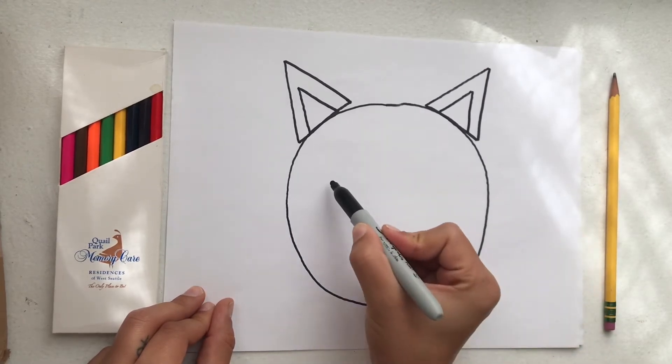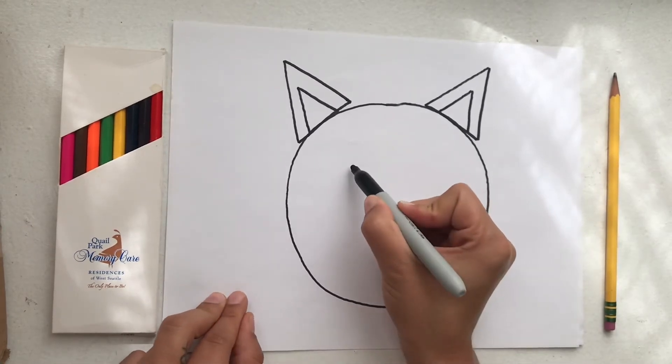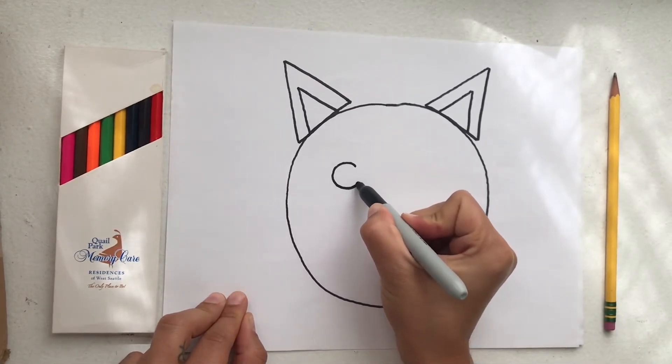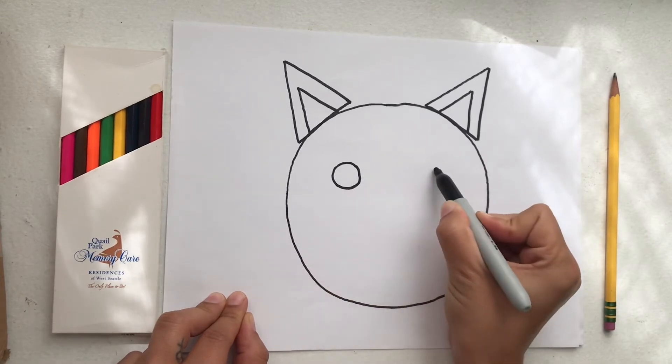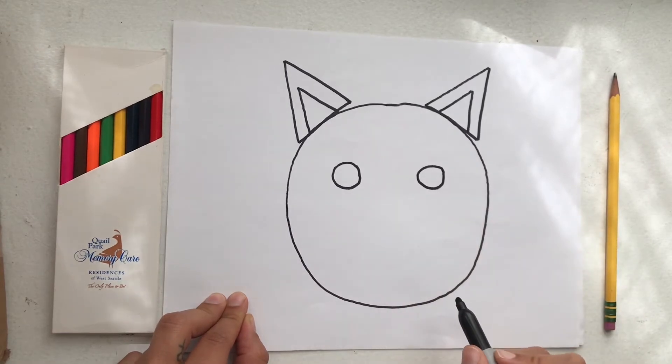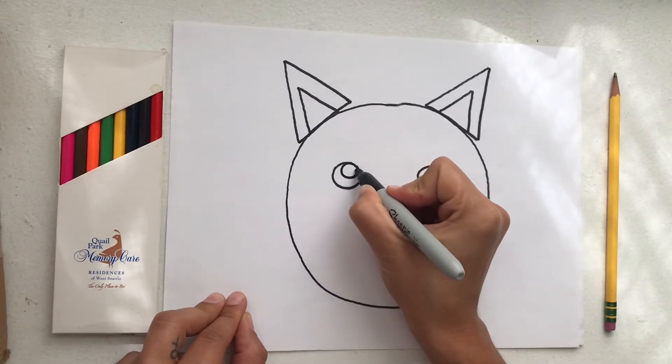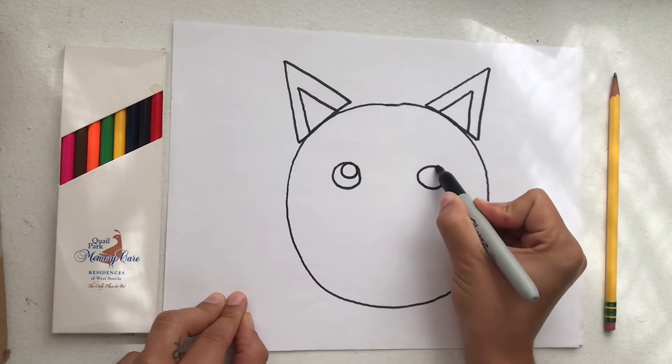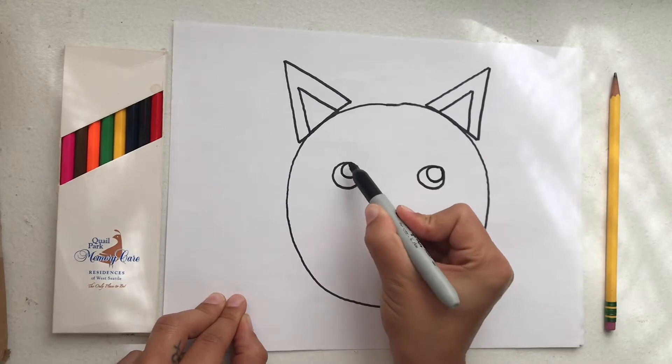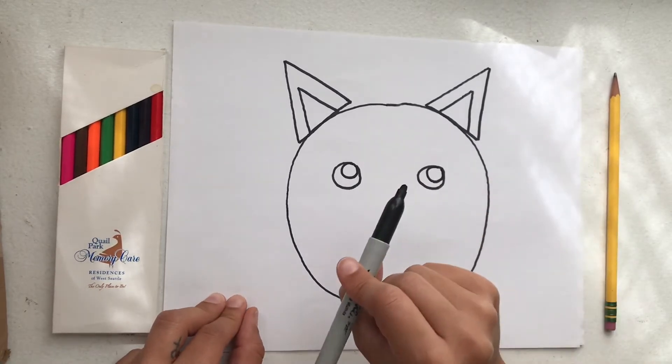For our eyes we are going to do two small circles. I like to do mine around this size but your kitty can have different eyes than mine. They don't need to look just like mine. I am going to do another small circle on the inside and one on the other side. I like to do my circles touching the side of one of the eyes because it looks like my kitty is looking up to the corner.